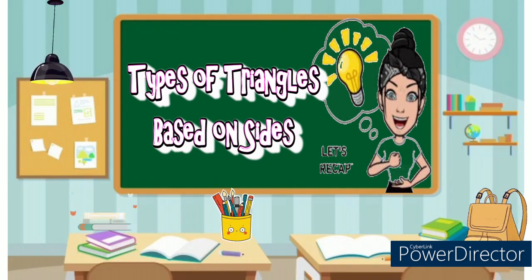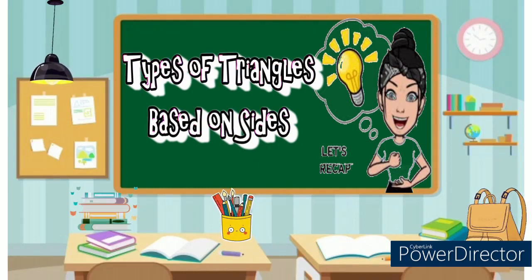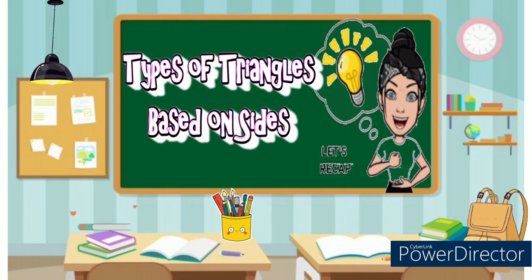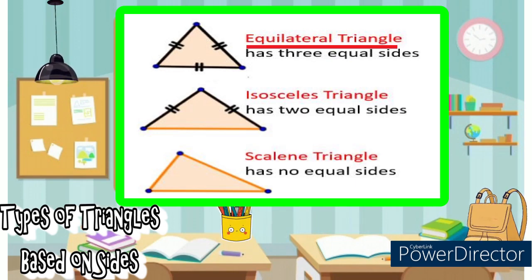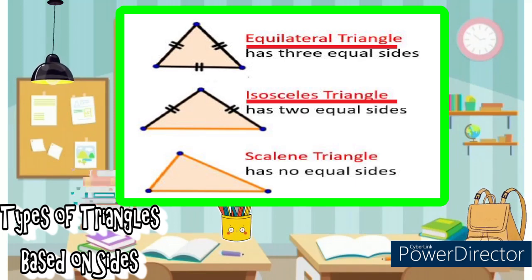Let's recap. Types of triangles based on sides: equilateral triangle when three sides are equal; isosceles triangle has two equal sides; scalene triangle has no sides equal.